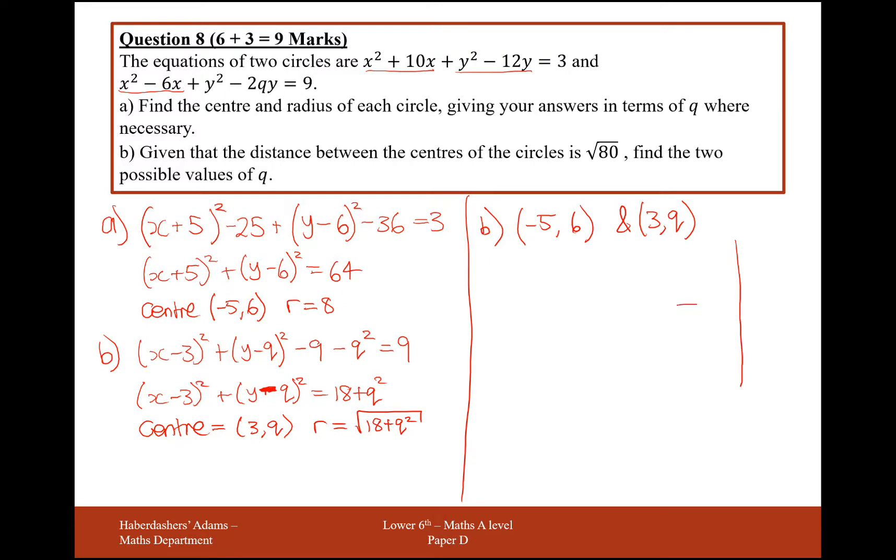So, just drawing this out in a small way on the side here, we have minus 5, 6, so over here, and 3, q, let's say it's here. Or, it could be up here. So, this distance from here to here needs to be square root of 80, and this distance from here to here needs to be square root of 80.